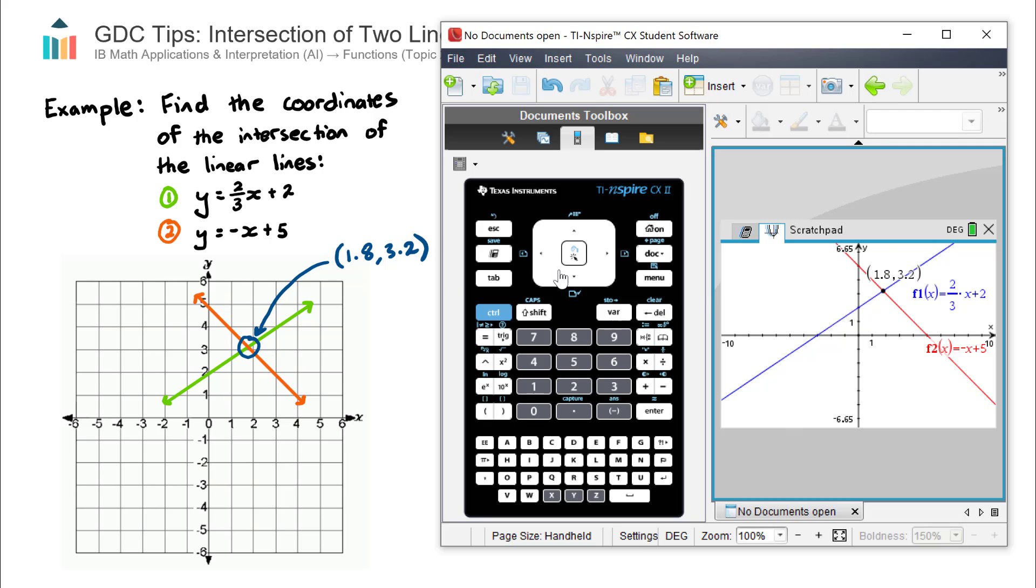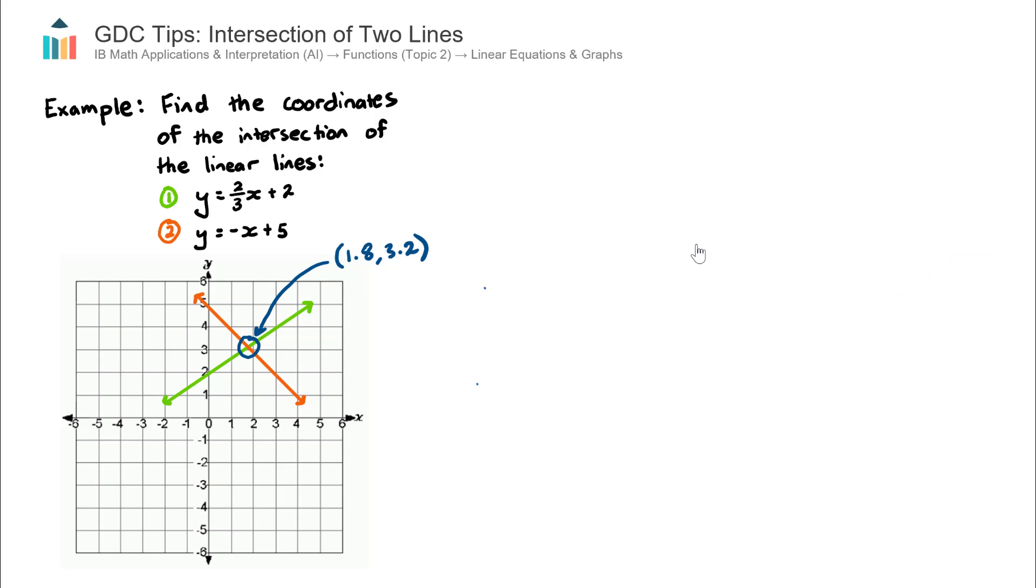And there we have it. So there's the coordinates again. It matches up to the previous method. And that right there is the second method. So we have covered two different ways to find the coordinates of linear lines using our graphics display calculator.